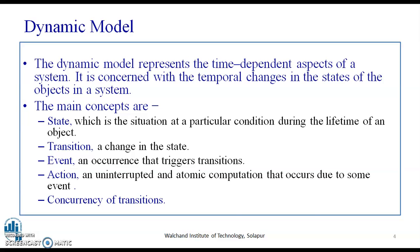What is a state? A state is the situation at a particular condition during the lifetime of an object. Each one of us in a lifetime goes through different states or phases. Consider the example: the newborn baby state, the childhood phase, the teenage phase, the adulthood, and the old age. A state is particularly a situation associated with a predefined or fixed time for a particular object.